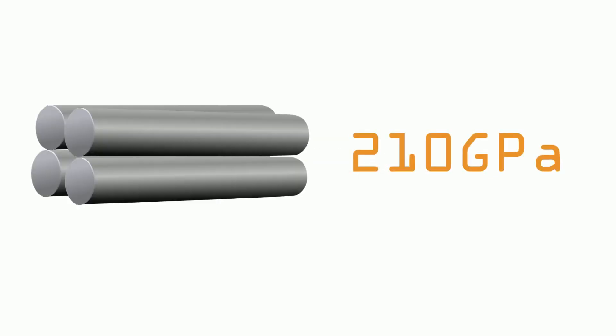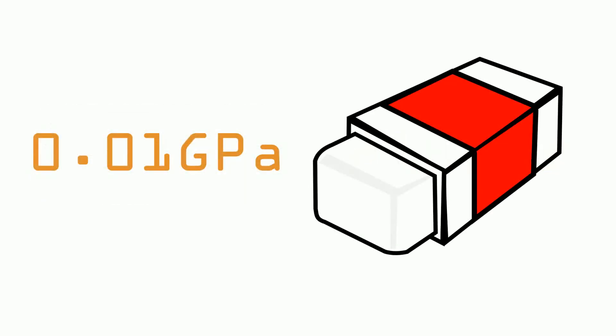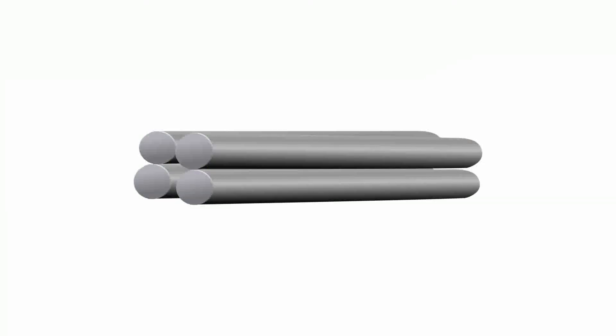As an example, steel has a modulus of elasticity of 210 GPa and rubber has 0.001 GPa. This represents in an easier manner that steel has high stiffness and rubber has low stiffness to bear a load.